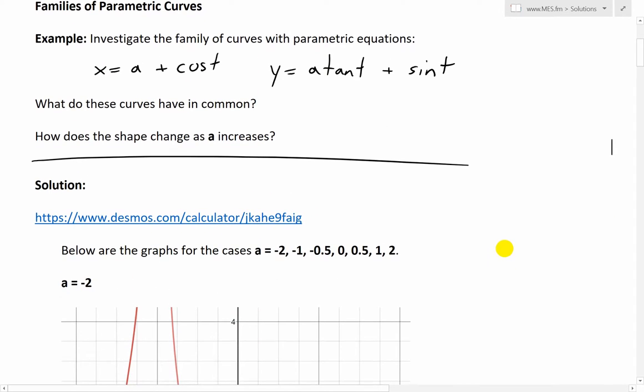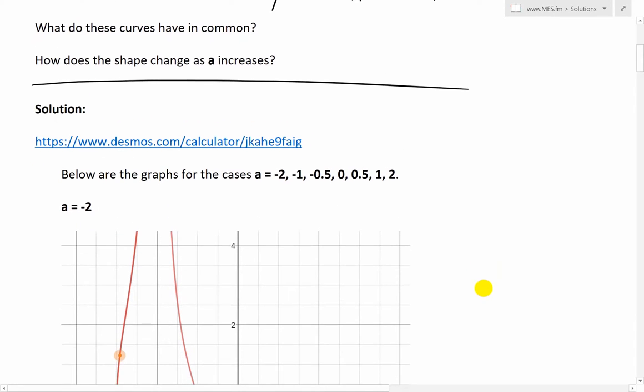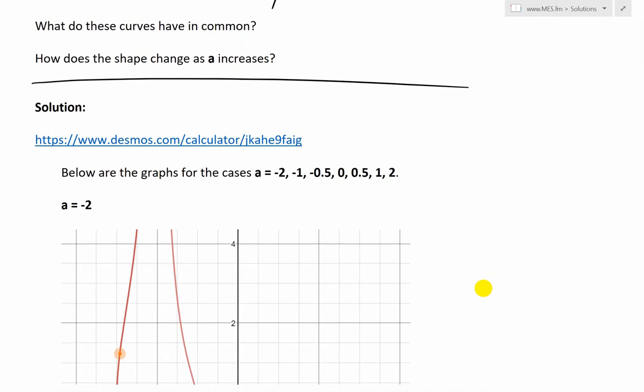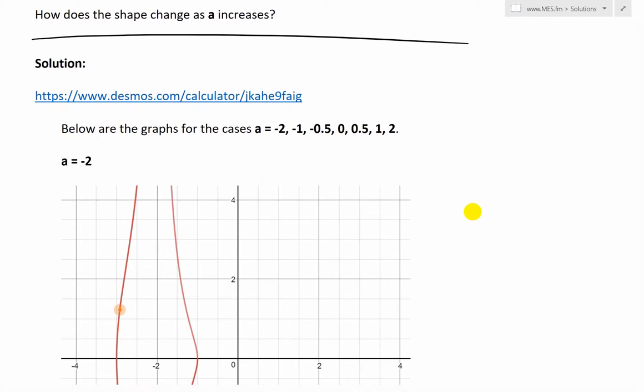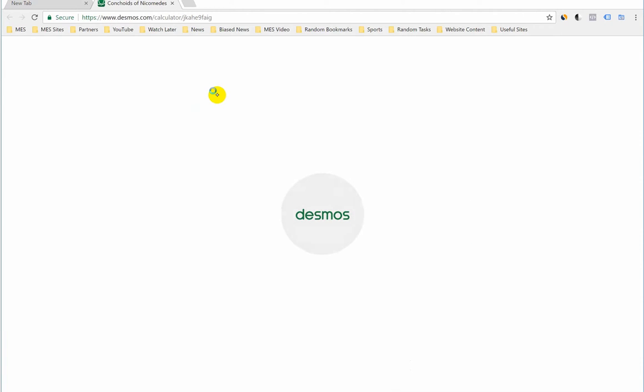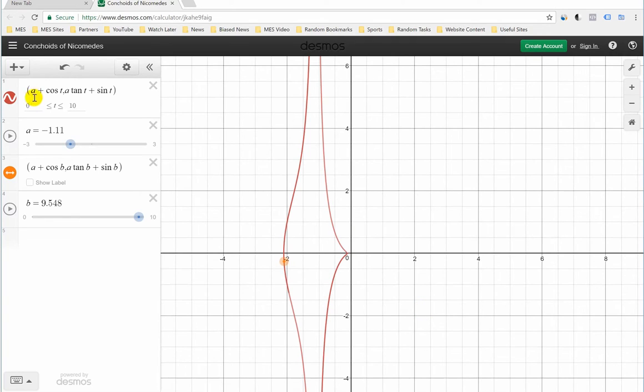Now if we wanted to graph the solution, we could just use that Desmos calculator that I've been doing many times in my earlier videos just to see it, and then we'll change a and see what happens. Here are graphs for specific values of a, but I'll get to that in a bit. What I've done here in this calculator, which is pretty cool, I've added that parametric equation form.